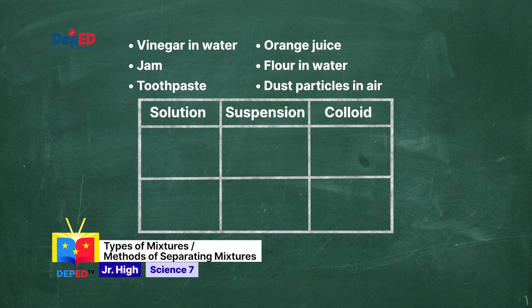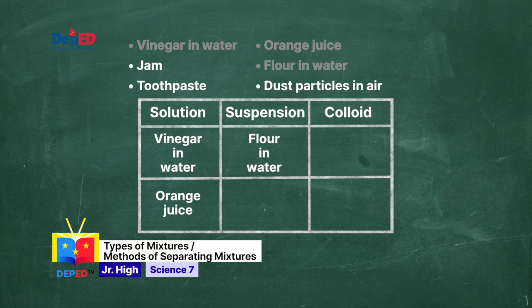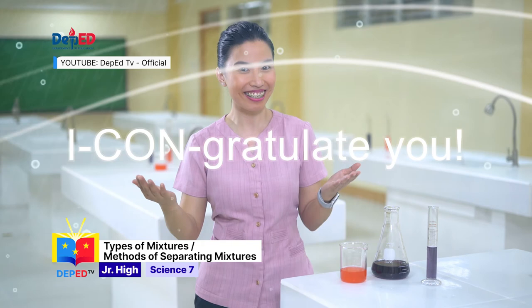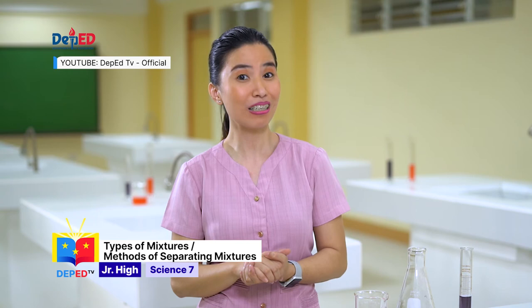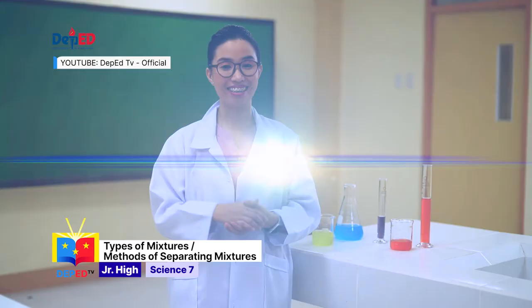Let's check your answers. Solutions are vinegar in water and orange juice, while suspensions are flour in water and dust particles in air. The colloids are jam and toothpaste. Congratulations! You made it! You can now classify mixtures according to particle size. Good job!